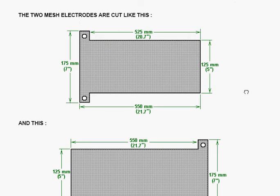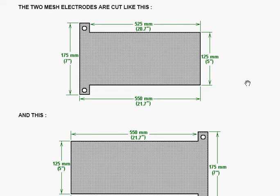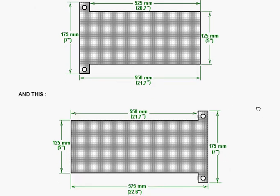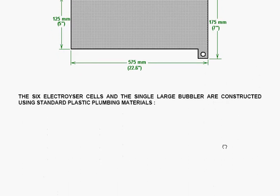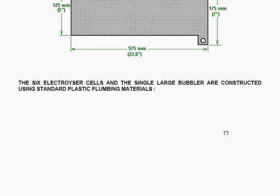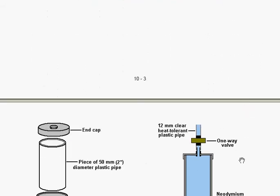The two mesh electrodes are cut like this. You'll notice that they are different sizes. One of the electrodes is cut 525 mm long and the other one is cut 550 mm long. Apart from that, the dimensions are the same. The six electrolyzer cells and the single large bubbler are constructed using standard plastic plumbing materials.